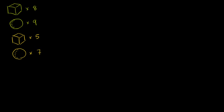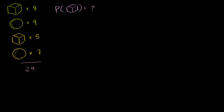For example, what is the probability of getting a cube — a cube of any color? To think about that, we consider all of the equally likely possibilities that might pop out of the bag. Well, eight plus nine is 17, plus five is 22, plus seven is 29. So we have 29 objects in the bag.